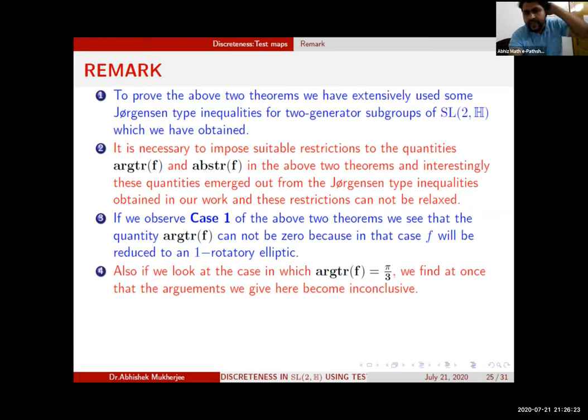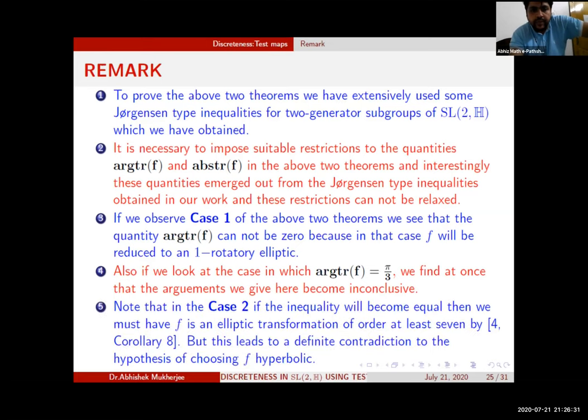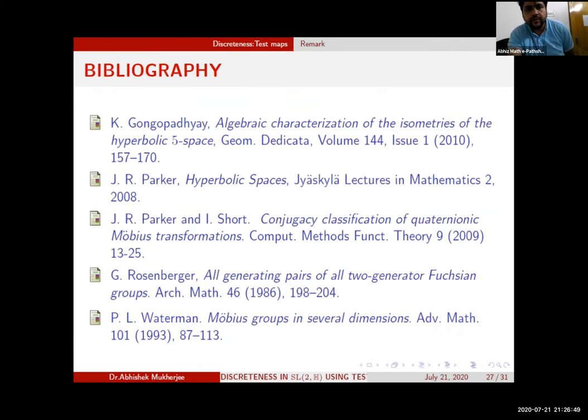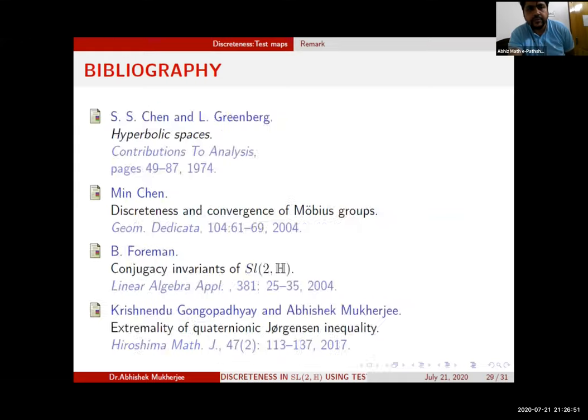The fourth remark: if you look at the case in which arg(tr(f)) is π/3, then we find at once that the arguments we give here become inconclusive. The last one is that in Case 2, if the inequality will become equal, then we must have f is an elliptic transformation of order at least seven. But this leads to a definite contradiction to the hypothesis of choosing f hyperbolic. These are the references, thank you.